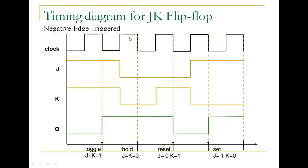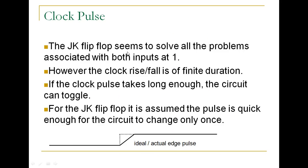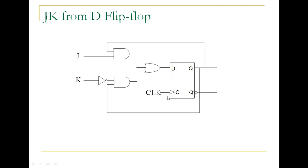The timing graph of a JK flip-flop negative-edge triggered: Q toggles when J=K=1, resets when J=0, K=1, and sets when J=1, K=0 — all on the negative edge. However, the clock rise and fall is of finite duration; if the clock pulse takes long enough, the circuit can toggle more than once. For the JK flip-flop it is assumed the pulse is quick enough for the circuit to change only once. You can also make a JK flip-flop from a D flip-flop.